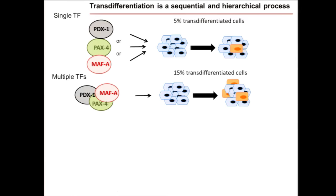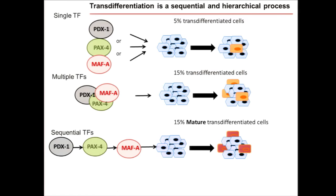This is elaborated in a schematic showing that when we provide these three transcription factors in a concerted way, we get progenitor cells — a paper going to be out very shortly — whereas when introduced sequentially, we see maturation of insulin-producing cells and correct segregation from other pancreatic hormones.